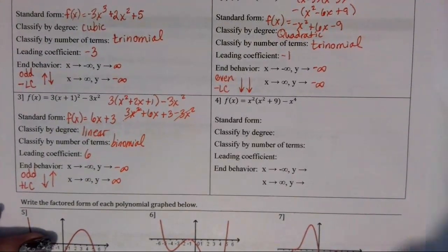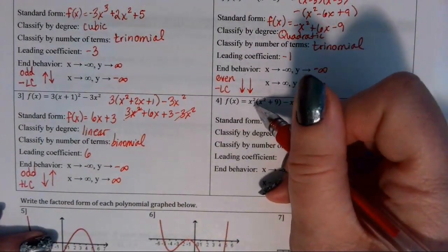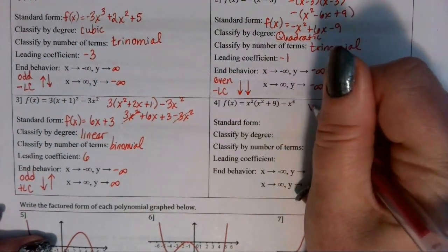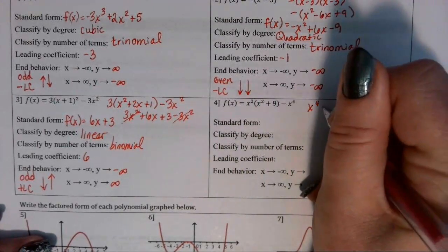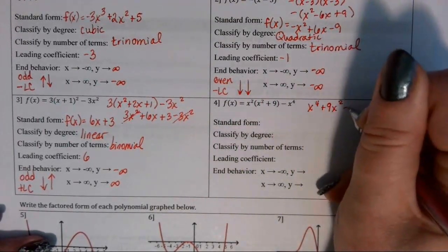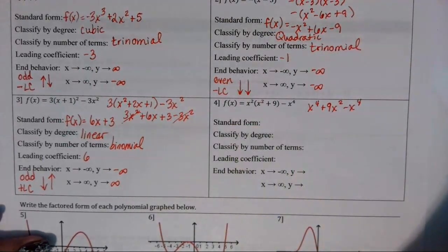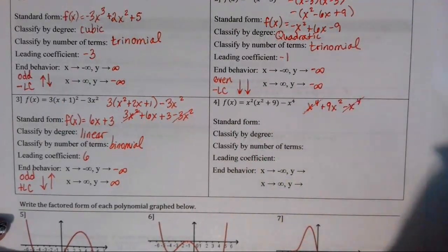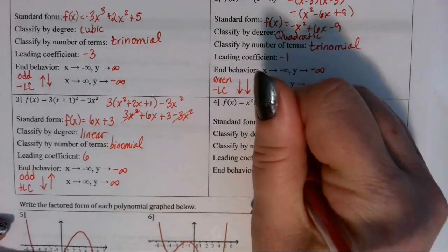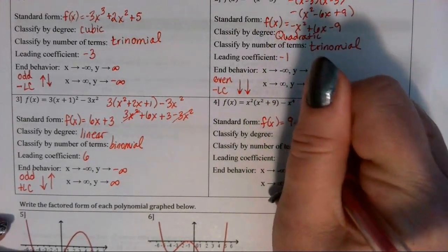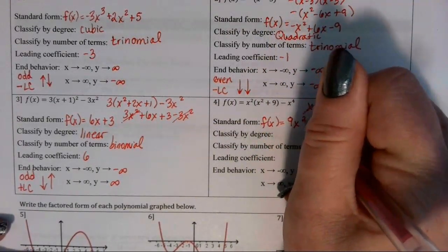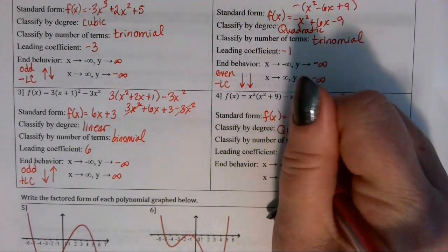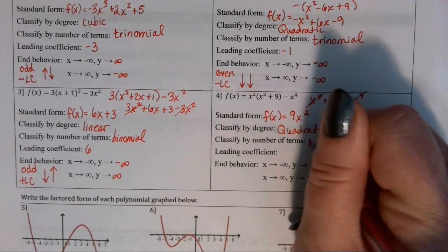In number 4, we're going to distribute x squared through the quadratic binomial in parentheses. So we'll have x to the 4th plus 9x squared, and then minus x to the 4th at the end. When we combine like terms, the positive x to the 4th and negative x to the 4th cancel, and we're left with 9x squared. So this would be a quadratic monomial.